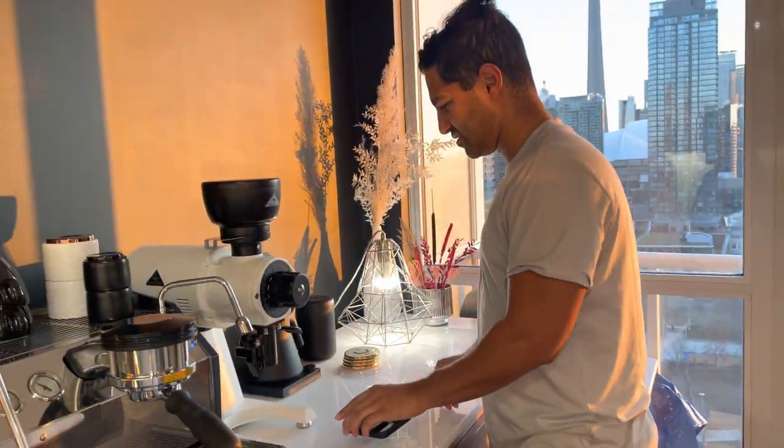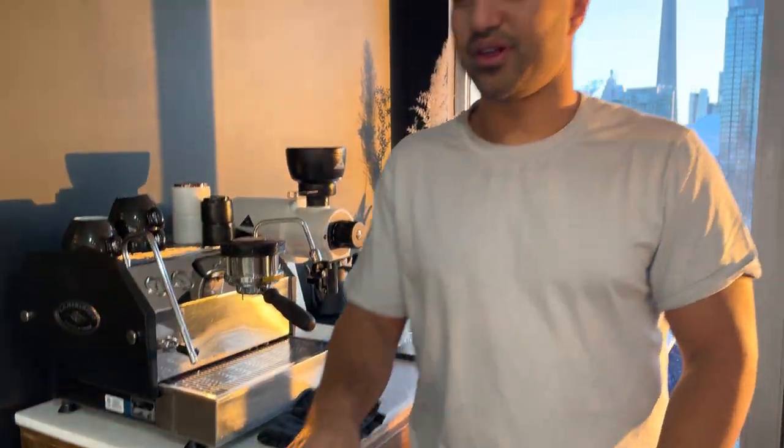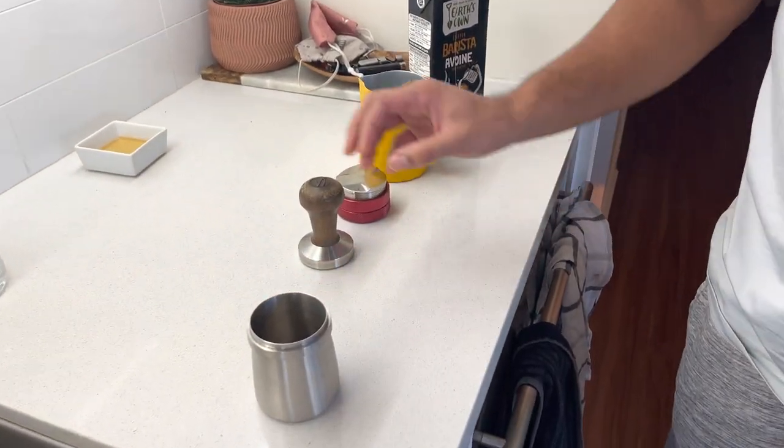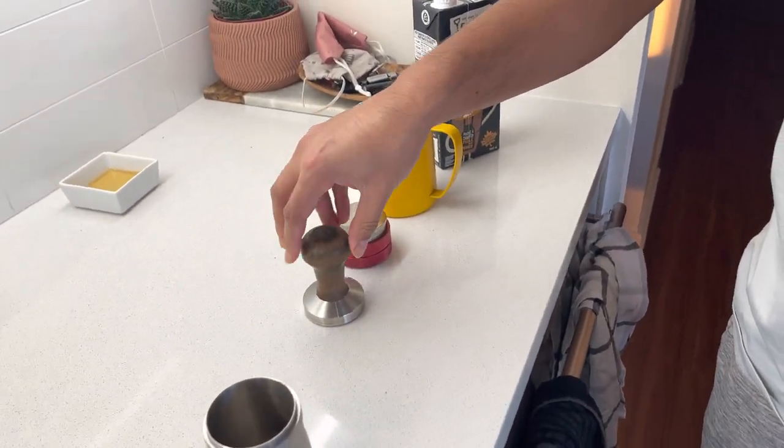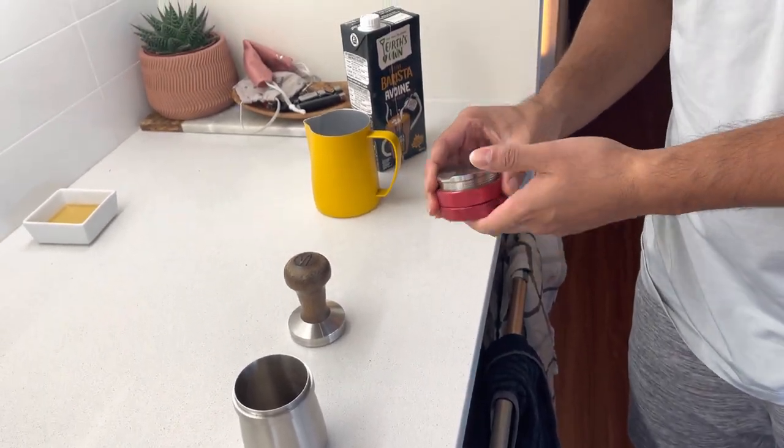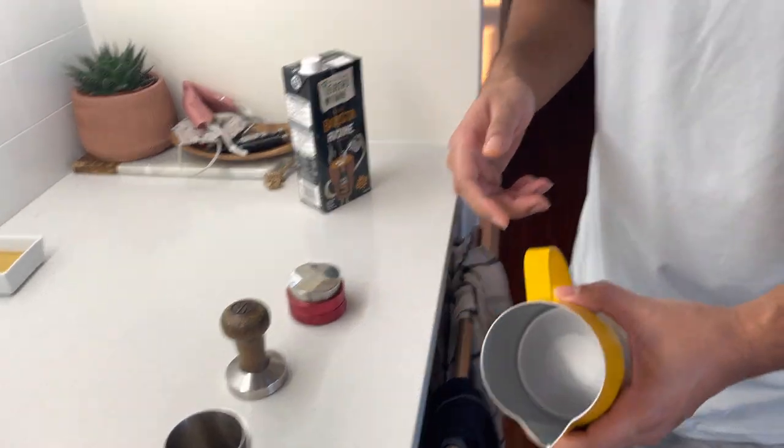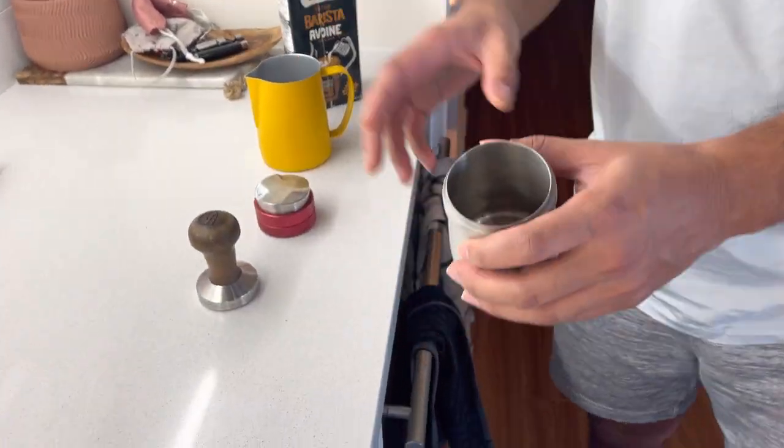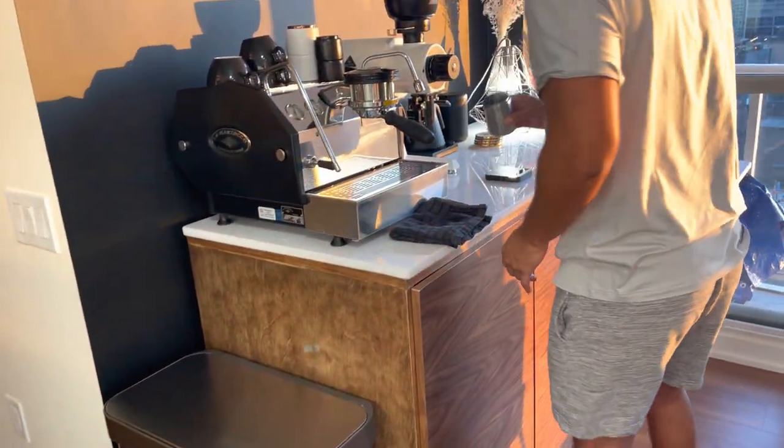So this is how I start. Scale, portafilter. I put aside everything I basically use. Dosing cup, you have the plastic one that comes with the grinder. A tamper, you may not need this. This guy, which I told you to get, which you have, which is great. And this guy here, frothing pitcher, barista blend.